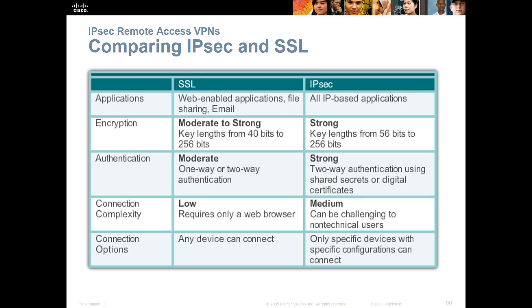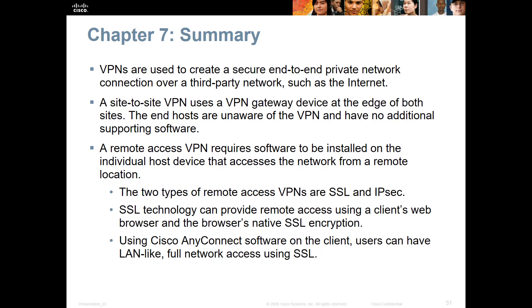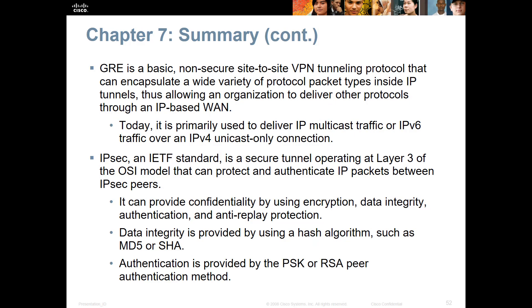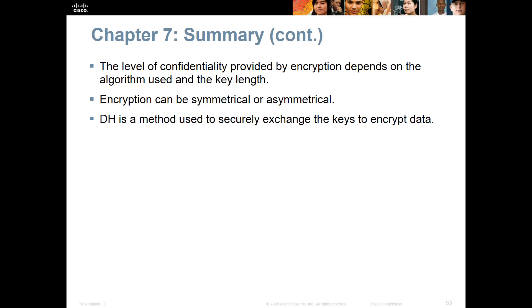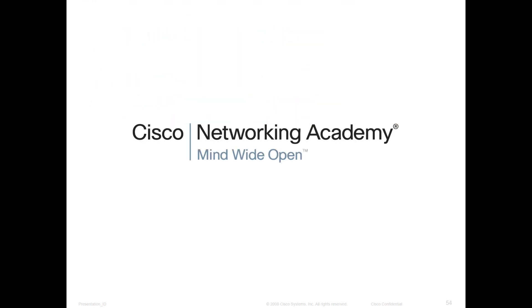Finally, comparing SSL versus IPsec remote clients: SSL is done through the web, while IPsec encrypts all IP-based applications. Encryption and authentication can be moderate or strong for both. SSL is much easier to set up than IPsec, but IPsec provides somewhat stronger security. That's the end of this chapter. We covered different types of VPN technology — VPNs, GRE, IPsec, SSL, pre-shared keys, IKE, DH groups, and encryption using symmetric and asymmetric keys. If you have any questions, please let me know. Thank you.